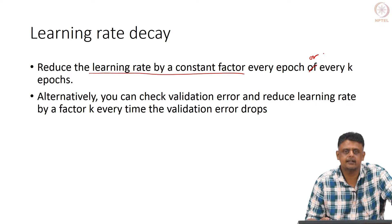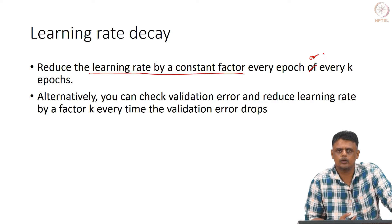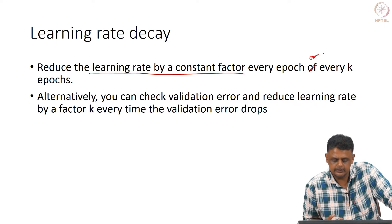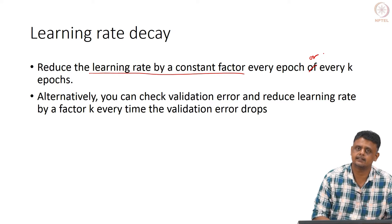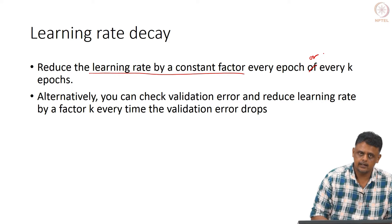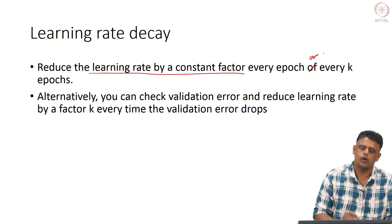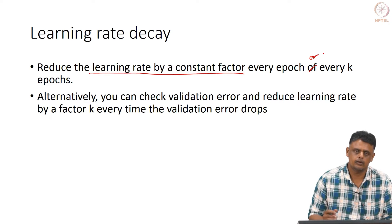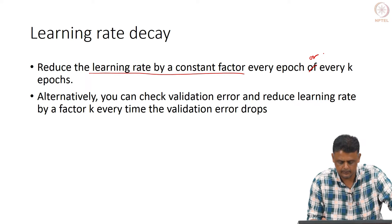This constant factor and k are hyperparameters you have to optimize. Another way is to monitor performance on the validation data and whenever it improves, decrease the learning rate by a certain fixed factor. What that factor is has to be determined by trial and error or some systematic search.